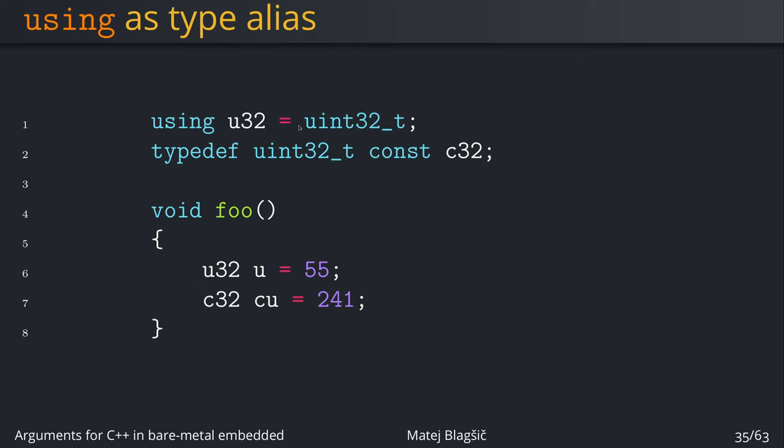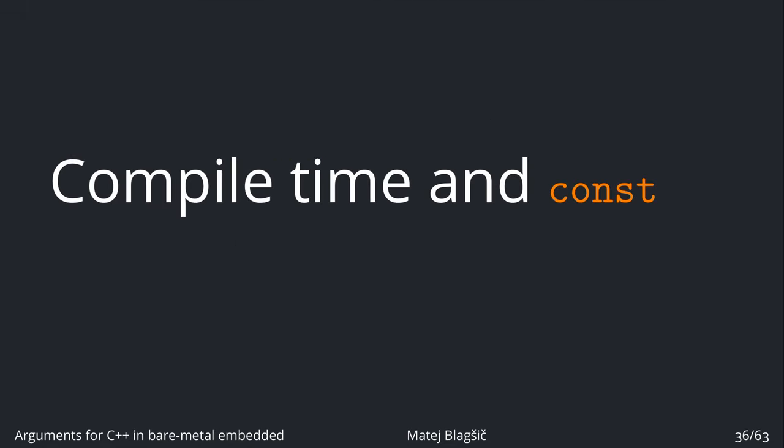With using, we use a much nicer expression. We say using u32 equals to uint32_t, and then when we use it in a function it looks like this. Again, there are more use cases for using, but this is the most simple one. Thank you for watching, and I'll see you in the next video when we're continuing with quite a big topic of compile time and const.